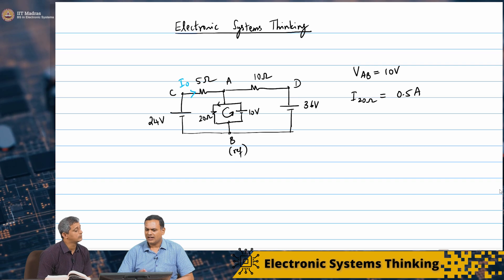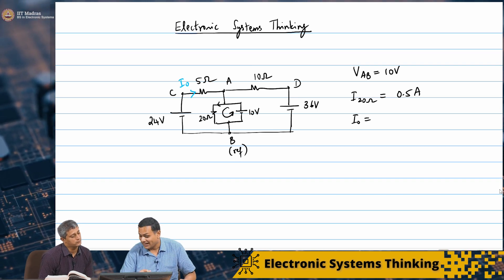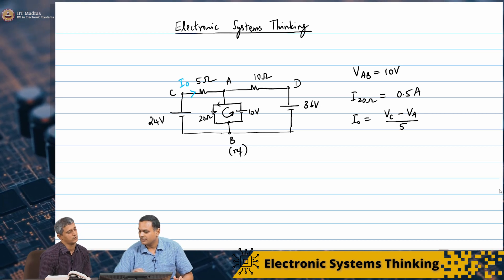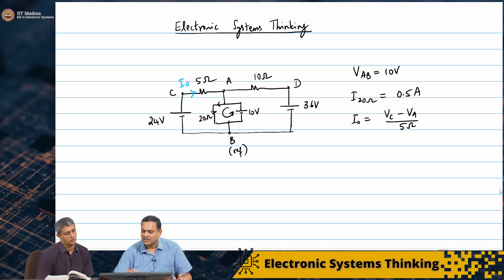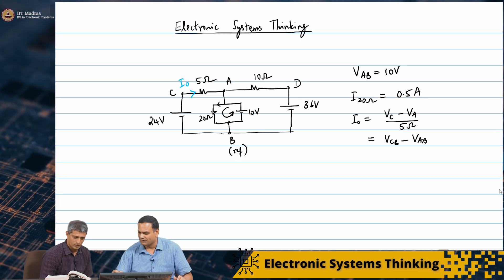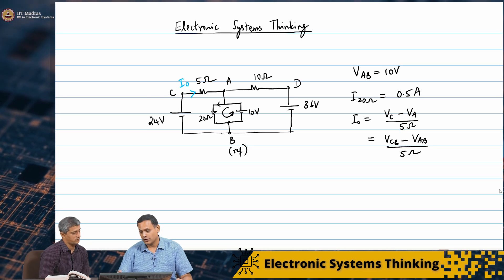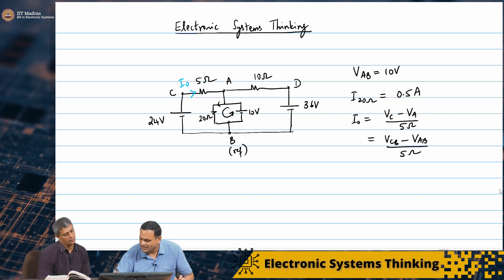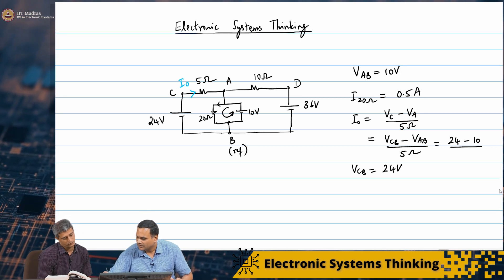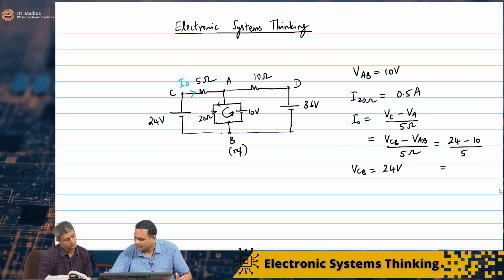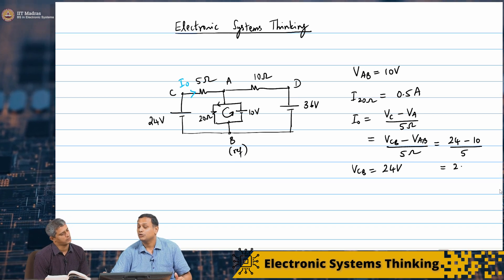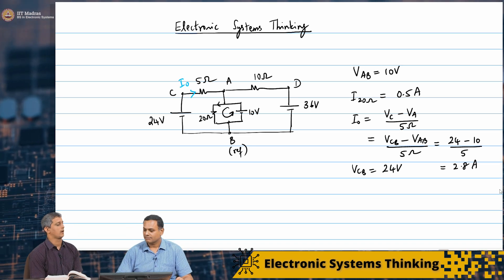Now to find out I naught, I know that I naught has to be Vc minus Va — which is the voltage across the 5 ohm divided by 5 ohms. I will write it as (VcB minus VaB) by 5 ohms, with respect to the reference. I already know Vab is 10 volts, so I need to find VcB. But I know VcB as well — VcB is 24 volts. So this is nothing but (24 minus 10) by 5, which is 14 by 5, which is 2.8 amperes.